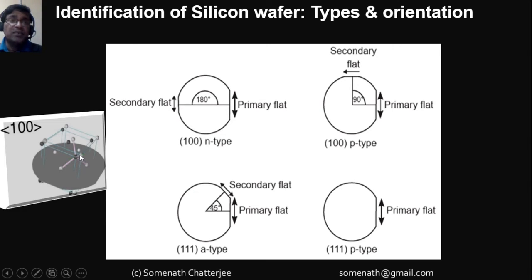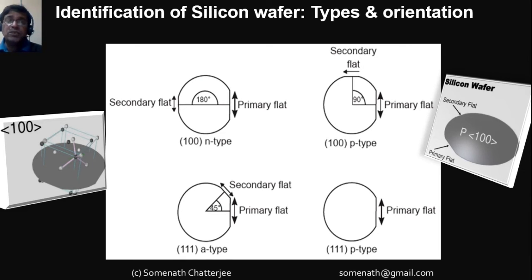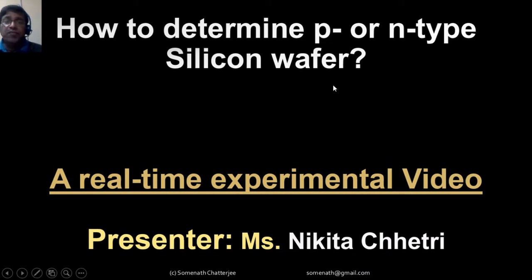Crystal orientation means the atomic orientation inside the crystals. For silicon atoms, it is two FCC — face-centered cube — phases intersecting each other. Generally, we are using the (100) p-type silicon wafer for integrated circuit fabrications, which are used in electronic gadgets like microprocessors, computers, laptops, and smartphones everywhere.